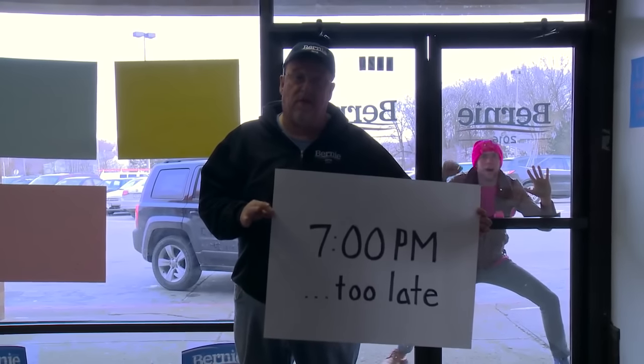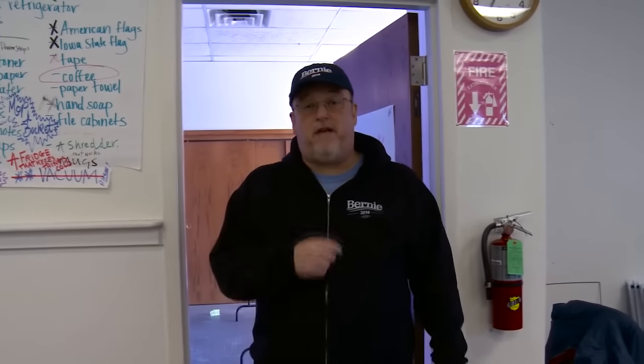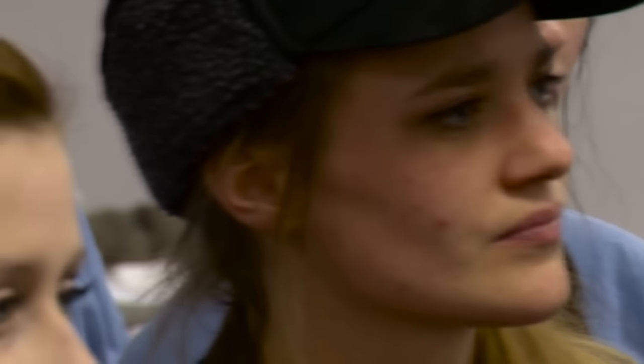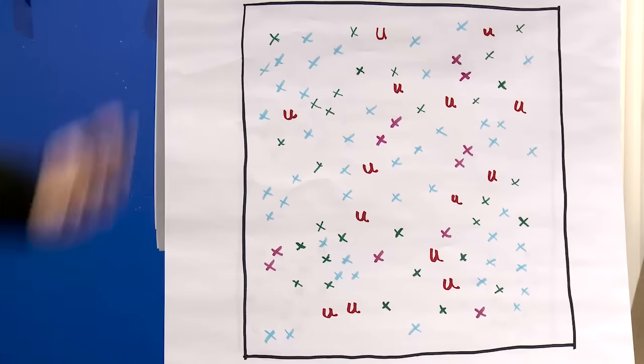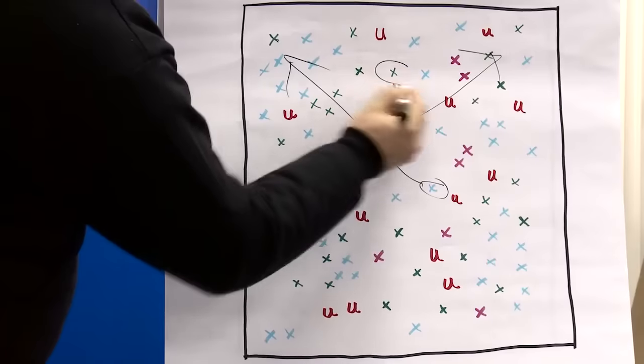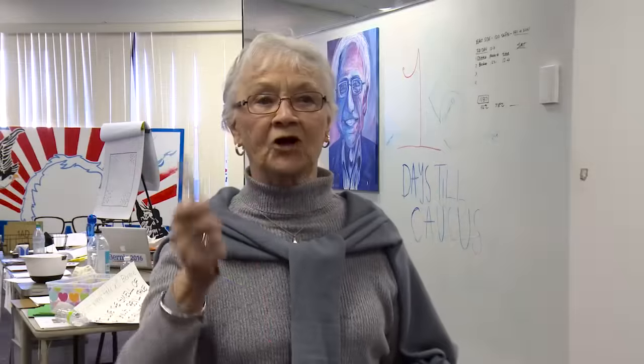As caucus chair, I call this caucus to order. Our precinct is allowed to elect nine delegates to the next level. We have 50 people registered here tonight, which means according to the formula you have to have eight in your group in order to be viable. Everyone joins a group with their candidate supporters. The count: Bernie Sanders 22, the green candidate 18, candidate pink 6, uncommitted 4. Viable means your preference group is big enough to be awarded delegates — in most cases that's 15 percent of the caucus.